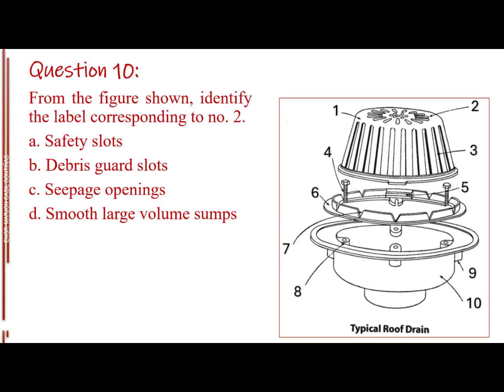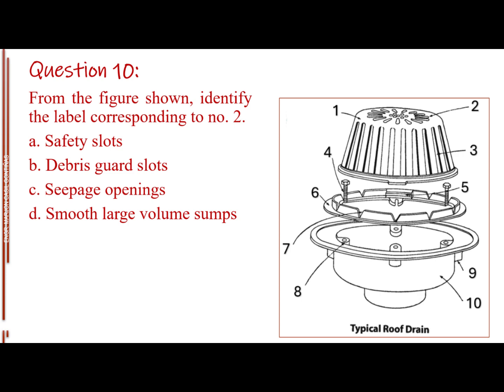Question number 10. From the figure shown, identify the label corresponding to number 2. Letter A, safety slots. Letter B, debris guard slots. Letter C, seepage openings. Letter D, smooth large volume and sumps. The answer is letter A, safety slots.